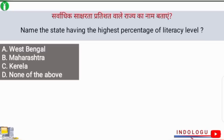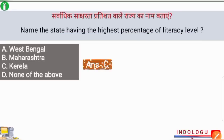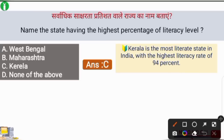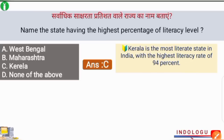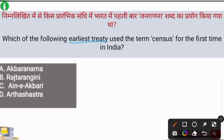Next question: which state has the highest percentage of literacy level according to the 2011 census? The correct answer is option C — Kerala. Kerala is the most literate state in India with the highest literacy rate of 94%.